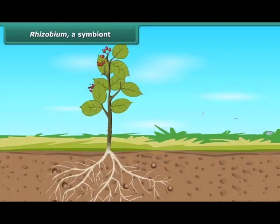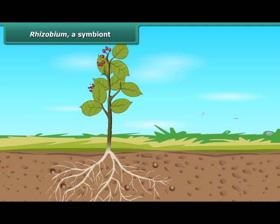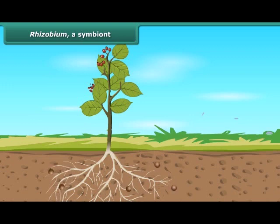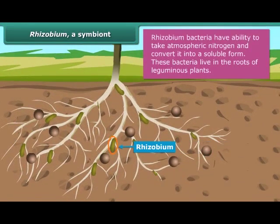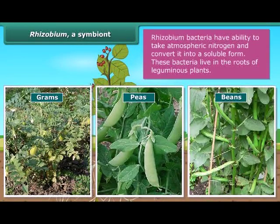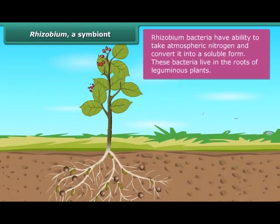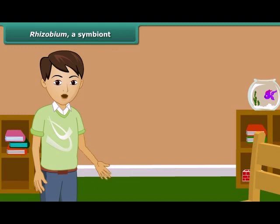Like us, plants also require a lot of nitrogen to make proteins. They absorb nitrogen continuously from the soil, due to which the amount of nitrogen in the soil becomes deficient. As we know, there is 78% nitrogen present in our atmosphere, but plants cannot use it directly as they can use carbon dioxide. They require nitrogen in soluble form. The bacterium called Rhizobium can take atmospheric nitrogen and convert it into a soluble form. These bacteria live in the roots of gram, peas, moon beans, and other legumes and provide them with nitrogen. In return, the plants provide food and shelter to the bacteria. Thus, Rhizobium shows a symbiotic relationship.